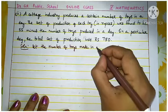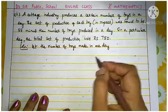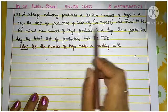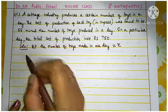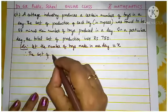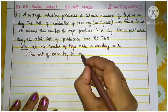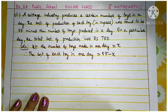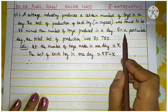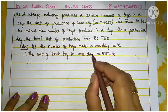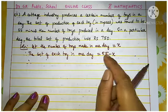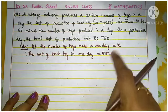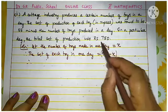We don't know how many toys are made in one day, so we take that as variable x. The cost of each toy is given as 55 minus x. The total cost equals the number of toys multiplied by the cost of one toy: x into 55 minus x.